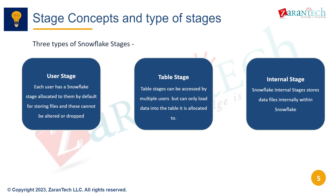There are three main types of stages in Snowflake. First, user stages are default stages allocated to each user for storing files; these cannot be altered or dropped. Next, table stages can be accessed by multiple users but can only load data into their associated table. Finally, internal stages store data internally within Snowflake's architecture.